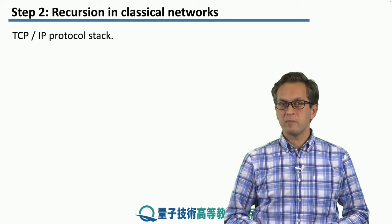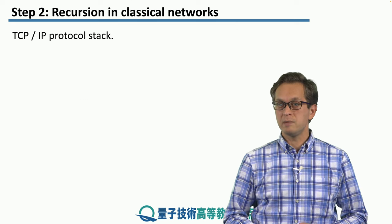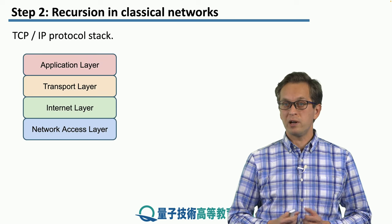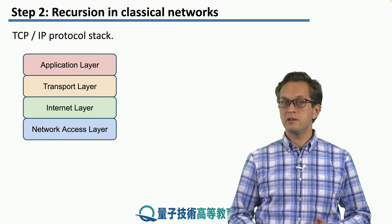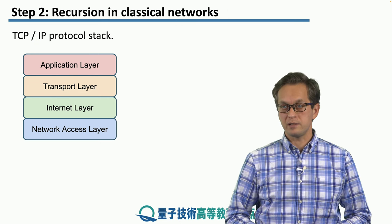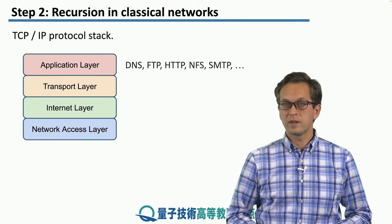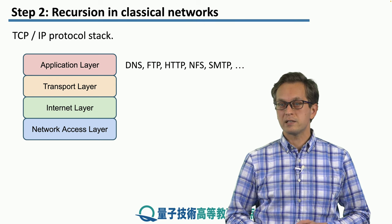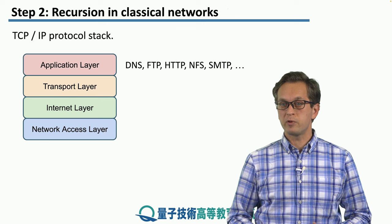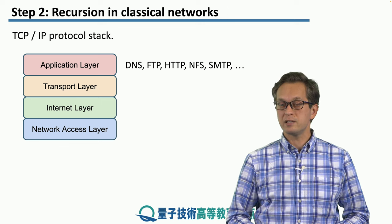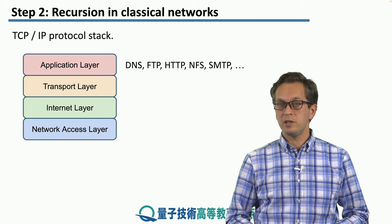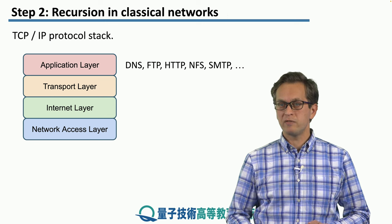Let's think about the protocol stack in the TCP/IP model. We have four layers: at the top the application layer, below that the transport layer, the internet layer, and the network access layer. Each layer has a multitude of its own protocols. For example, in the application layer we have DNS, FTP, HTTP, NFS, SMTP, and many more, each serving different needs.